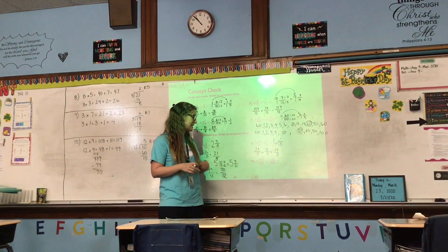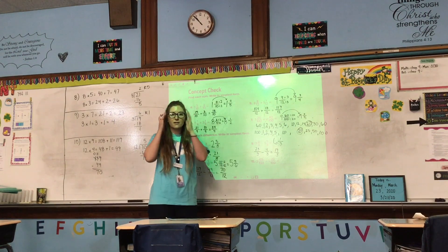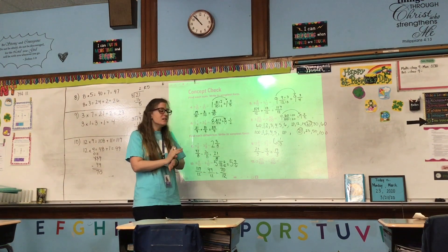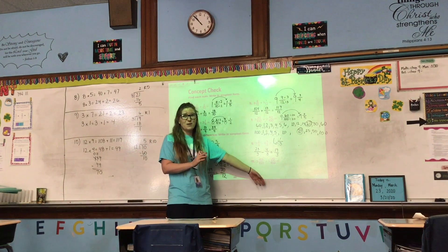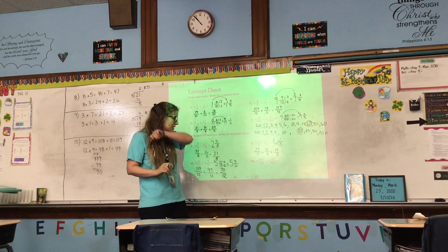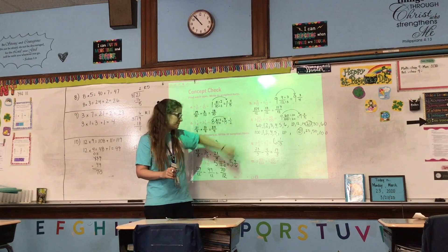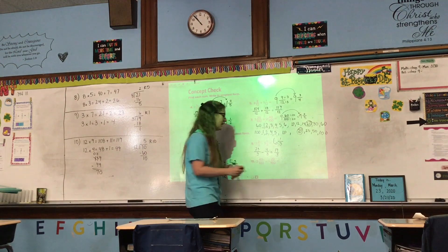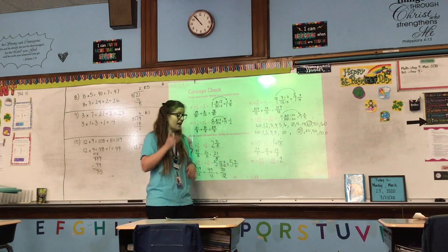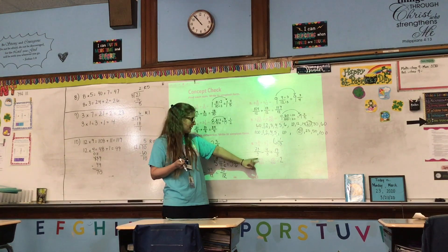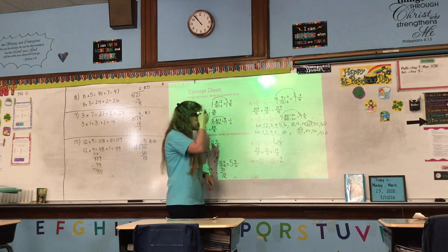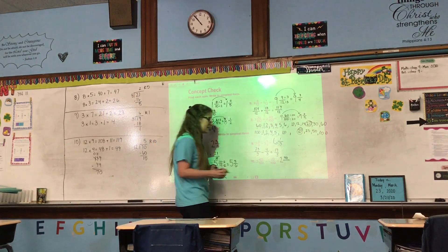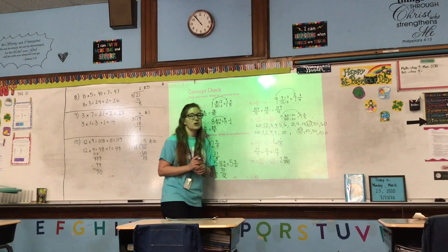Now we have number 11: 3 and 60 hundredths minus 1 and 20 hundredths. This is another one where if we converted, we'd end up with division you don't quite know how to do yet. Just by looking at it, I can tell we won't have to regroup. So we'll go ahead and solve it the way we solved number 7. Take the whole numbers first: 3 minus 1 is 2. Now subtract the fraction parts: 60 minus 20 is 40. Denominator stays the same. So we have 2 and 40 hundredths.